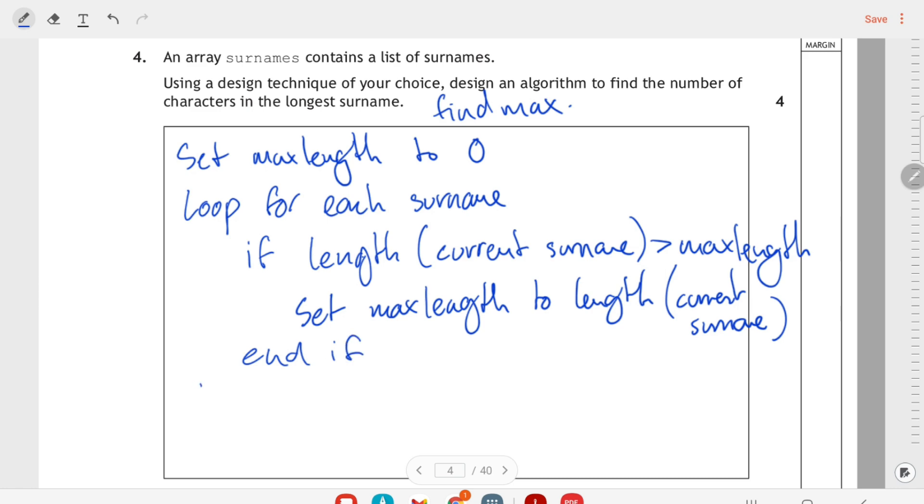You can probably see that I'm a Python programmer here. I suppose I could say that I'm ending my if and ending my loop, but I'm not going to lose marks over something like that. And that's my straightforward four mark find max algorithm.